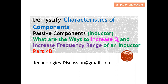Earlier I did a Part 4A series which discussed the equivalent circuit of an inductor. For this video, I'm going to discuss the ways to increase Q, the quality factor, and how to increase the frequency range of an inductor. As covered in Part 4A, when the frequency is higher than the self-resonant frequency, an inductor may not behave as an inductor anymore — it behaves as a capacitor, which is not desired. So in this video I'll discuss how to increase the self-resonant frequency.